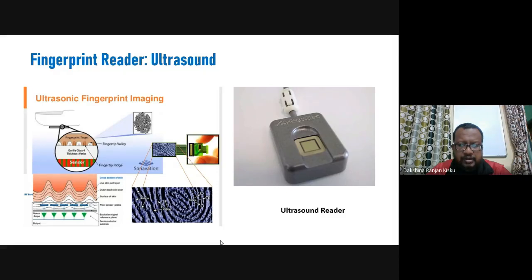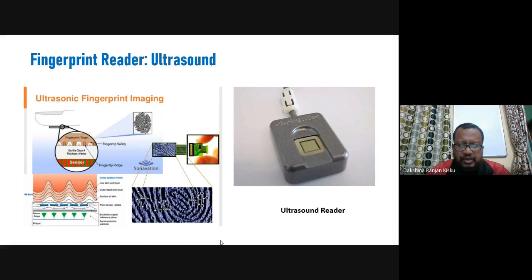The ultrasound reader has two main components: a sender and a receiver. When a person places their thumb on the ultrasound reader, the sender sends an acoustic signal to the plate. The signal bounces off the plate and generates a fingerprint image.